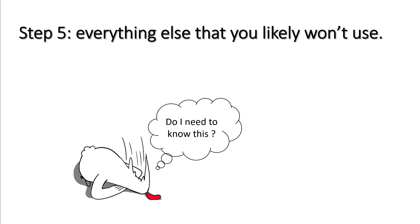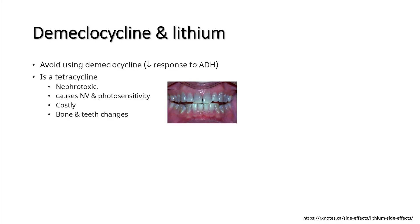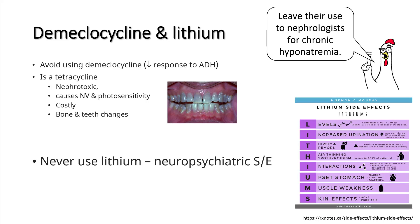Lastly, there are other medications that can be used in hyponatremia, but we do not use them as inpatient — they are usually reserved for nephrologists managing chronic hyponatremia. The first are vaptans, which are vasopressin receptor antagonists. These have not shown mortality benefit over usual methods, they are expensive, and they have a tendency to correct sodium very rapidly — so avoid their use while the patient is in hospital. Nephrologists may use them as outpatient for persistent hyponatremia after failing water restriction and solute intake. Demeclocycline and lithium are a few other drugs nephrologists use as outpatient; there is no role for these medications for inpatient use.